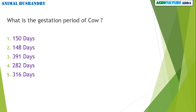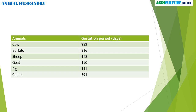In animal husbandry: what is the gestation period of a cow? It is a very important question. Options are 150 days, 148 days, 391 days, 282 days, and 316 days. The gestation period of a cow is 282 days. Please note the other animals and their gestation periods in days.